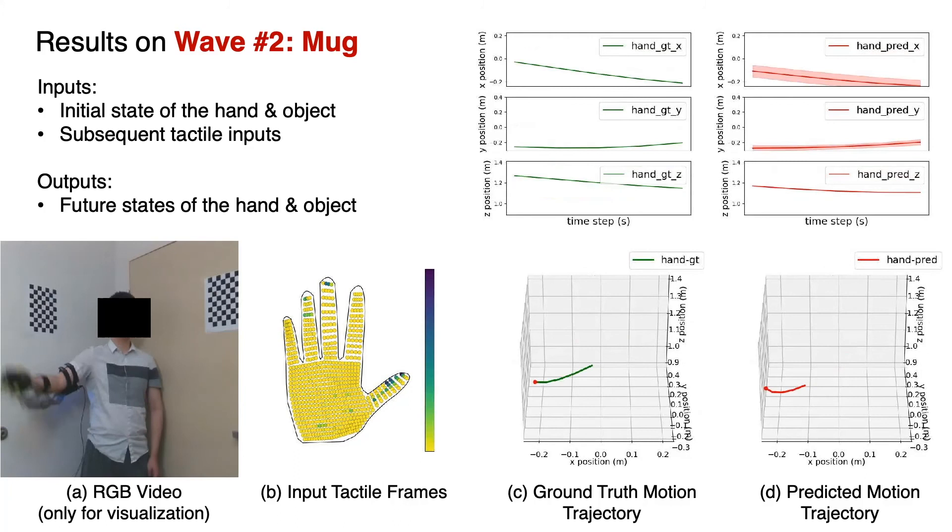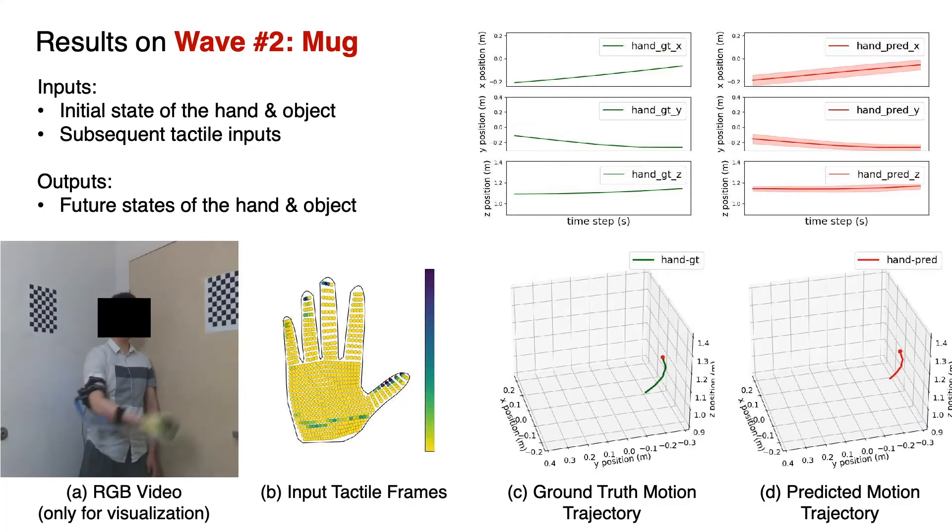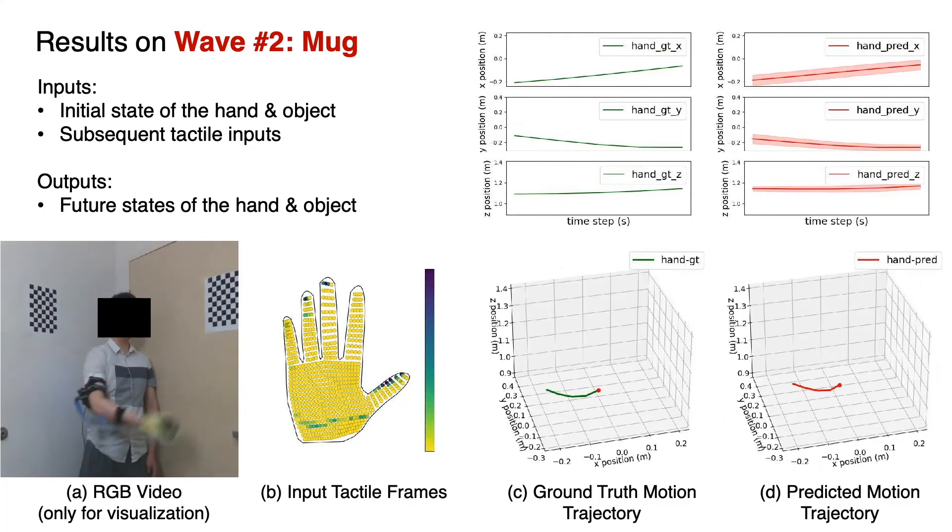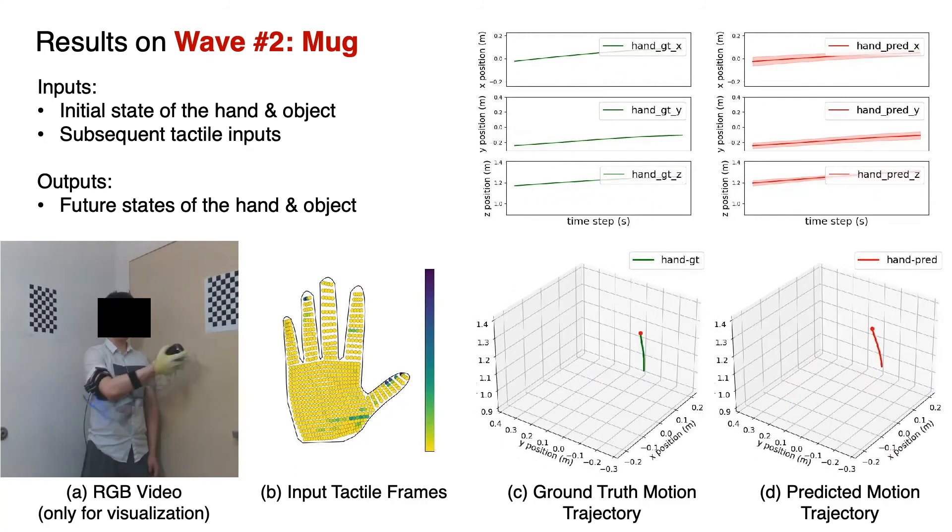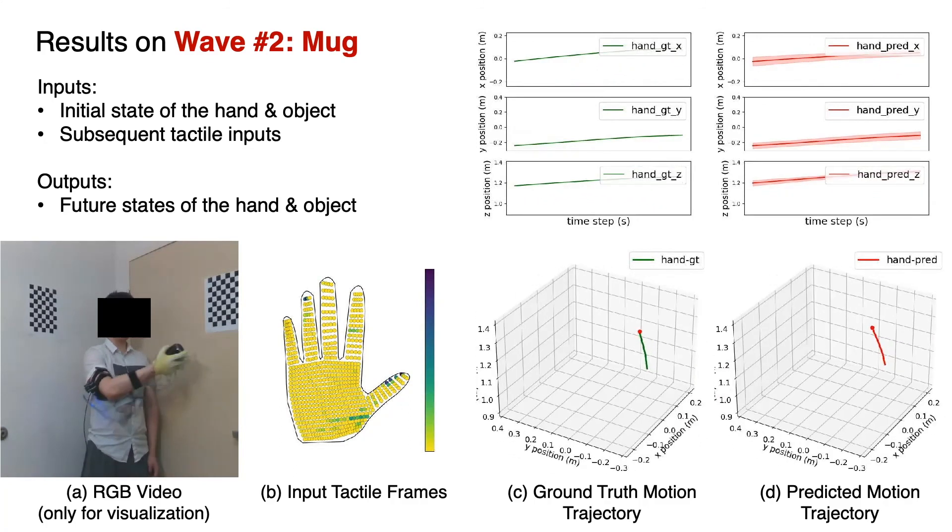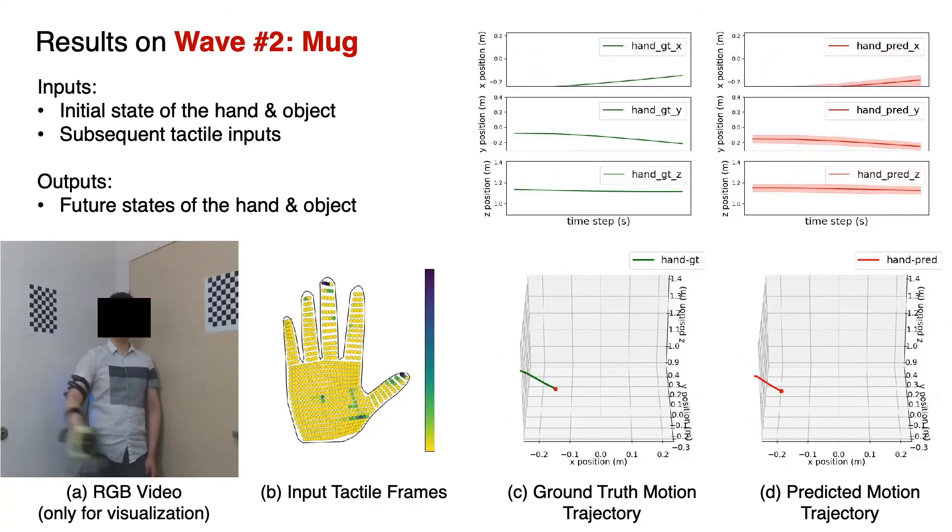Here we show the results on waving a mug. The inputs to our model are the initial state of the hand and the object, as well as the subsequent tactile inputs. The outputs are the future states of the hand and the object.